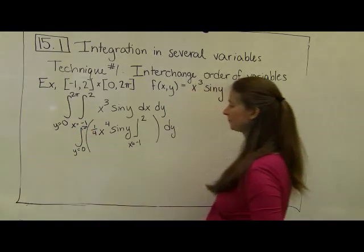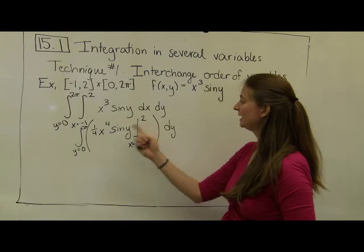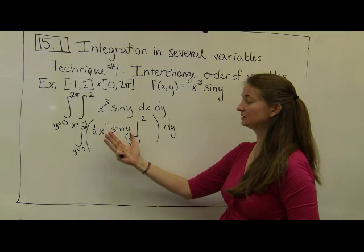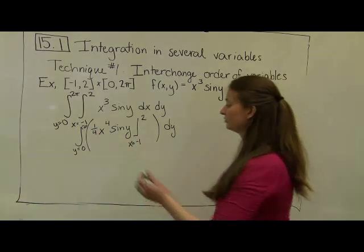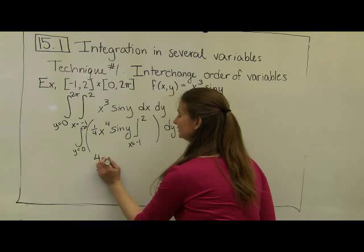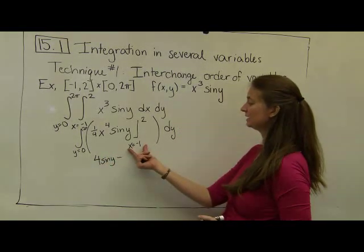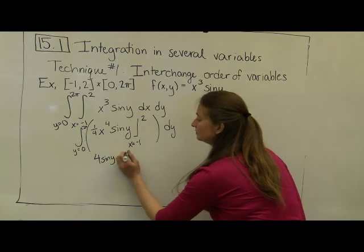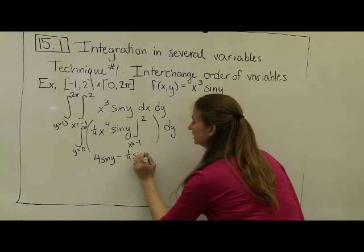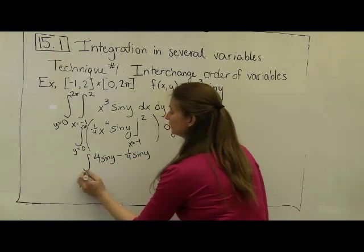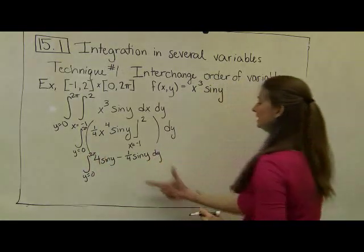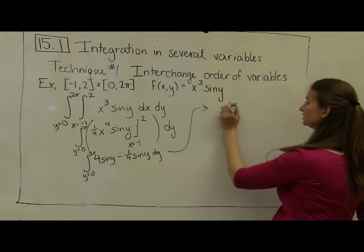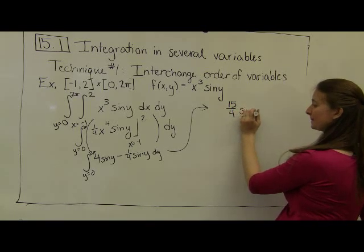So y equals zero to two pi. Let's go ahead and evaluate this. When my x value equals two, I plug two in for x and get two to the fourth, which is sixteen. Sixteen divided by four is four. So I end up with four times the sine of y. Then I subtract plugging in negative one for x — negative one to the fourth is positive one — so I subtract one-fourth sine of y. I need to take the integral of this as y goes from zero to two pi. Rewriting: four minus one-fourth is fifteen-fourths times the sine of y dy, evaluated as y goes from zero to two pi.